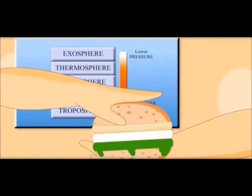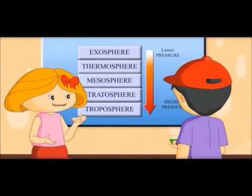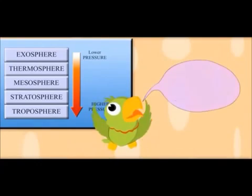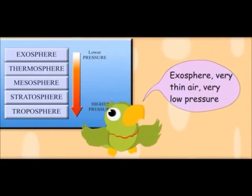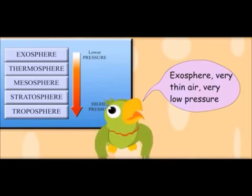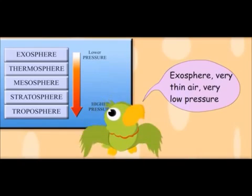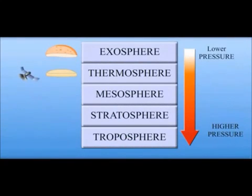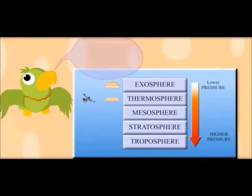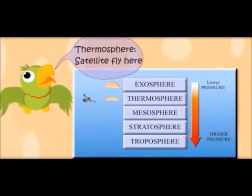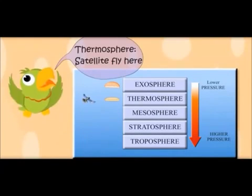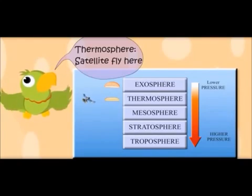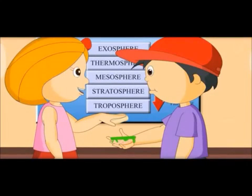This is the top layer. Air is very thin here — the exosphere. There is thin air and very low pressure. This is called the thermosphere. Satellites fly in this layer.